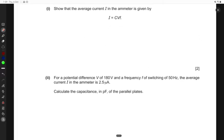They're saying that show that the average current I in the ammeter is given by this expression. Now, we know that the current I is equal to the ratio of the charge that flows in the wire divided by the time, how fast the charge will flow.